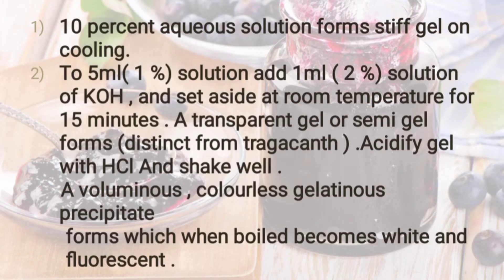For the identification test: prepare a 10% aqueous solution — upon cooling it forms a stiff gel. For another test, prepare a 1% pectin solution (5 mL), add 1 mL of 2% KOH, and keep at room temperature for 15 minutes — a transparent or semi-gel forms. When HCl is added and shaken, a colorless gelatin forms, and upon boiling it turns white or fluorescent — confirming the presence of standard pectin.